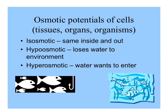We can describe cells, tissues, or organs by how they relate to their environment osmotically. They're iso-osmotic if the concentration of solutes is the same inside and out. They're hypo-osmotic if the cell loses water to the environment — that would happen if a less salty cell is in a saltier environment. Or a cell could be hyper-osmotic, where water enters the cell, which may happen if the cell is saltier than the surrounding fresh water.